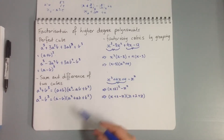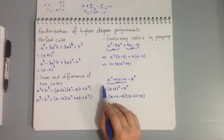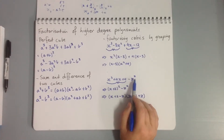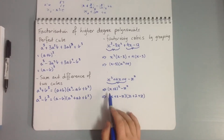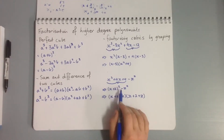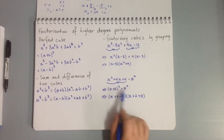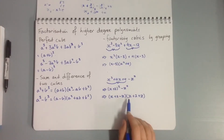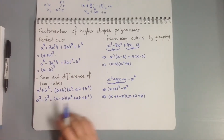We can also group a trio of terms plus a single one. For example, x² + 4x + 4 - z²: we recognize x² + 4x + 4 as a perfect square, so we have (x + 2)² - z². Now applying difference of two squares gives (x + 2 - z)(x + 2 + z).